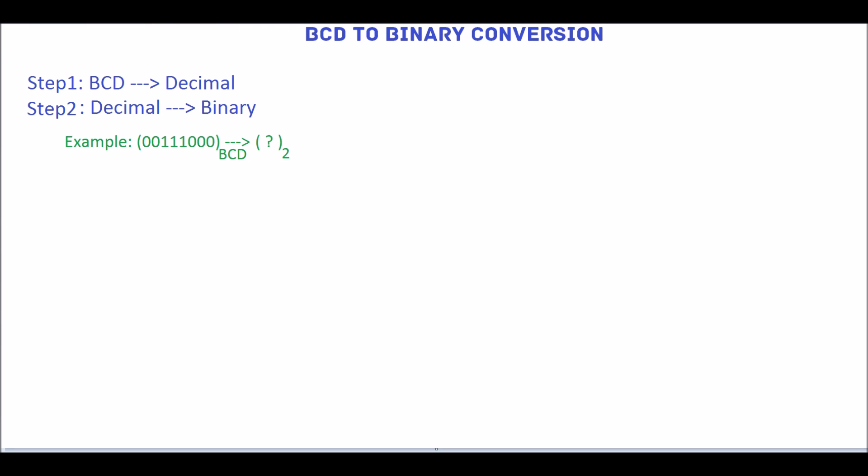Now we will convert the BCD number 0011100 to its equivalent binary number. The first step will convert this BCD into its equivalent decimal number. For this conversion, drag this BCD number into groups of 4 bits and do the grouping from right to left.